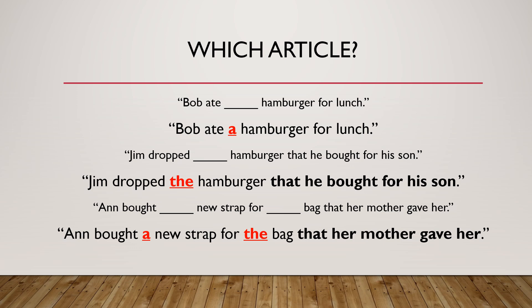In that sentence, strap is general — we have no special information about this strap. But bag is very specific — her mother gave it to her. In this case, we need a new strap and the bag.